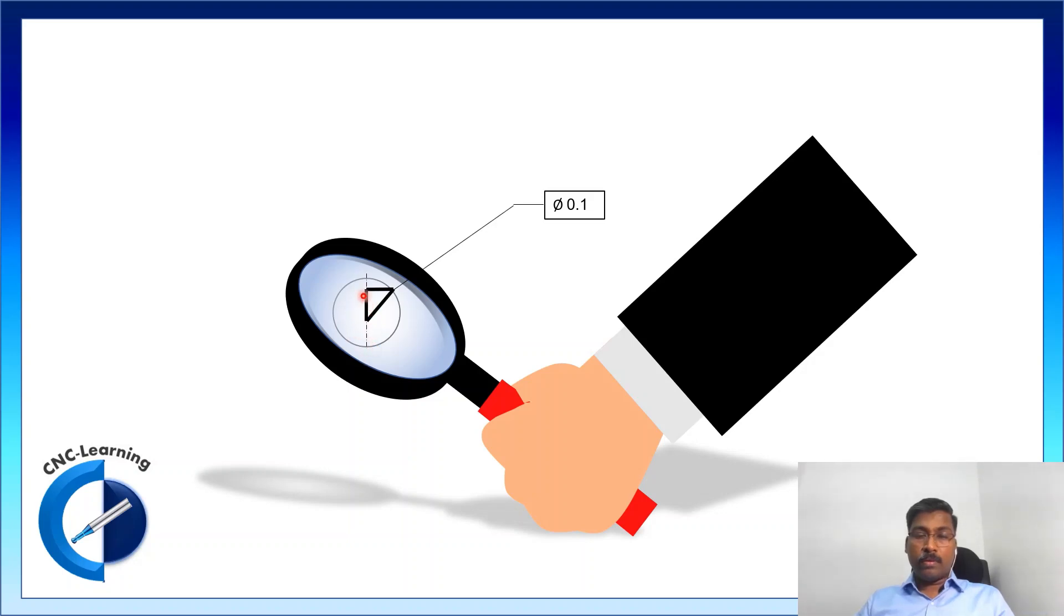Now, the deviations can be in x-axis and y-axis. Now, the drawing denote the tolerance in diameter.